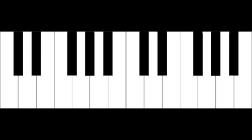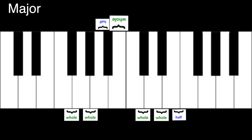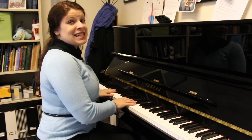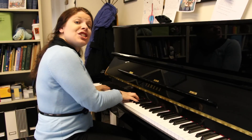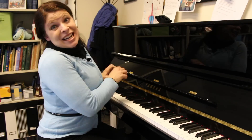Major, one of the two most common tonalities, is formed by the following series: whole step, whole step, half step, whole step, whole step, whole step, half step. Using this same sequence of steps, I can create a major tonality starting on any note, then use these notes for creating songs. [sings] Please don't take my sunshine away. Major!